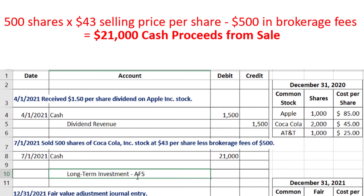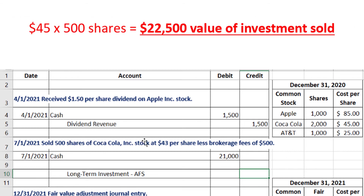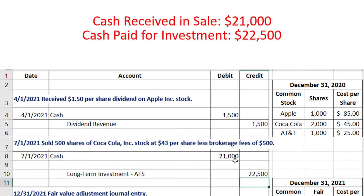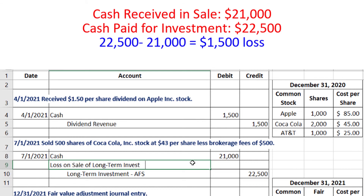If you had trading securities, instead of AFS you would put trading securities in that account. We're only receiving $21,000 for something we originally paid $22,500 for, so we have a loss on the sale of long-term investments. The amount of the loss is the difference between these two numbers, which is $1,500. Another way to determine a gain or loss is to figure out whether the difference goes on the debit or credit side to balance the journal entry — if it goes on the debit side, it's a loss; if it goes on the credit side, it's a gain.